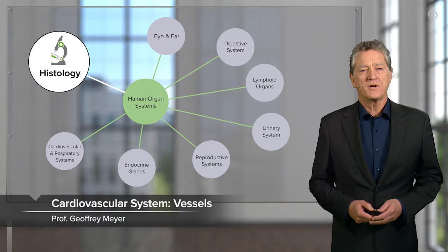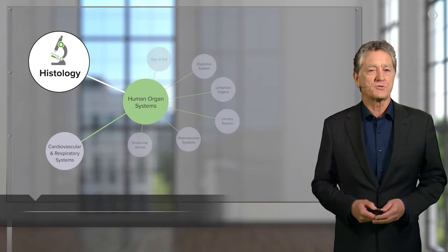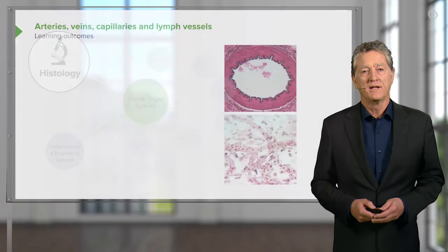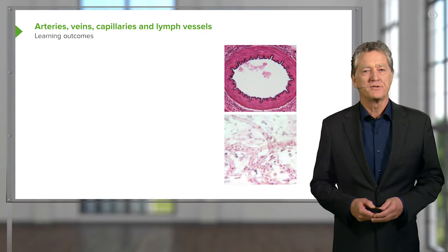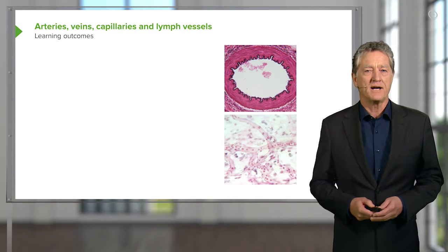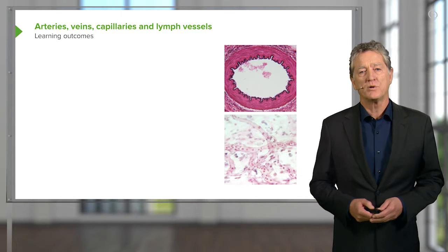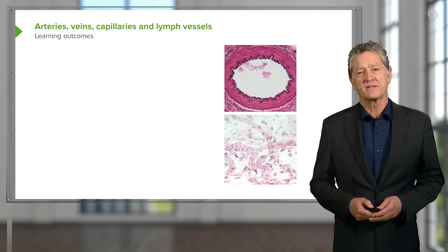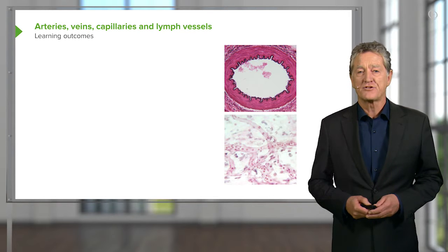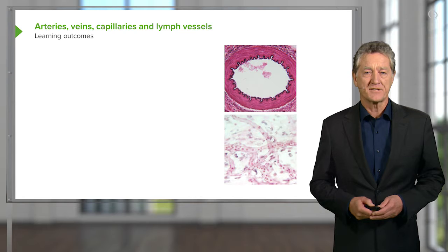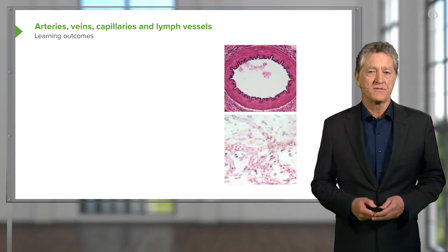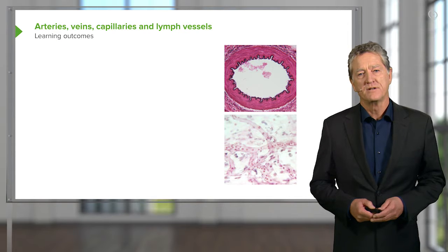In this lecture, I'm going to describe the histological structure of arteries that carry blood away from the heart to the tissues, veins that return that blood back to the heart, and the structure of capillaries where all the exchange occurs from the blood to the interstitial compartment surrounding cells, and then from that compartment exchanging waste products and other substances back into the venous system to circulate those products elsewhere in the body.